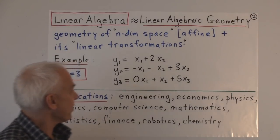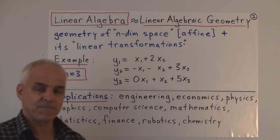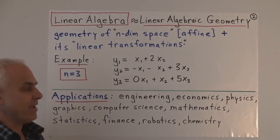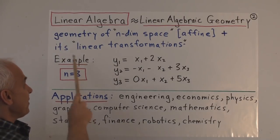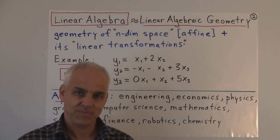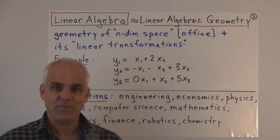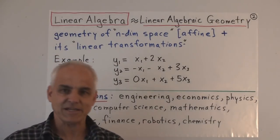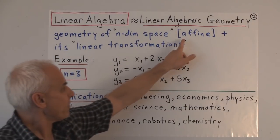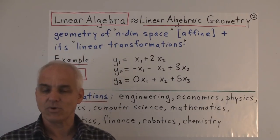Another way of describing Linear Algebra is to say that it's the geometry of n-dimensional space — a certain affine n-dimensional space — and the linear transformations of that n-dimensional affine space. I'll put those things in quotes because you're not supposed to know already what those things mean, but it's good to have a rough idea of where we might be headed.